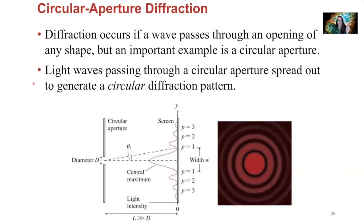When light passes through a circular aperture, it spreads out to generate a circular diffraction pattern. So we don't have those vertical bright and dark fringes like we do from the double or single slit. We have a circular, concentric pattern. We've got a broad central bright maxima, and then we've got rings of dark minima — destructive interference — and then rings of bright maxima again — constructive interference.